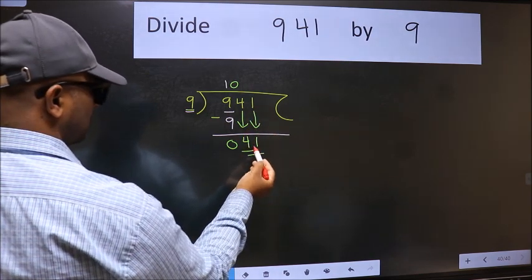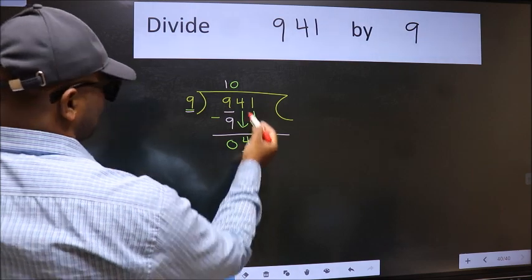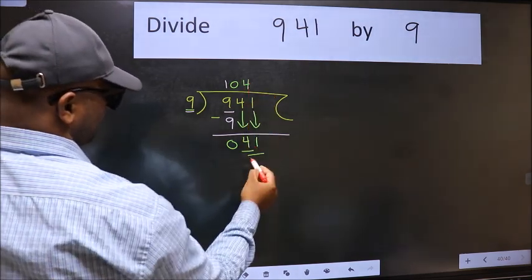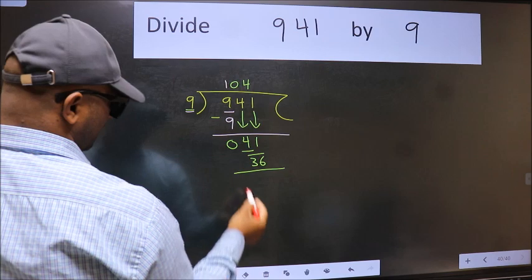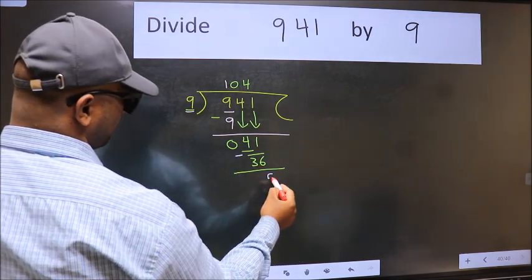Now 41. A number close to 41 in the 9 table is 9 fours, 36. Now we should subtract. We get 5.